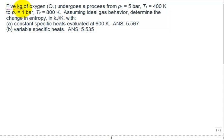For this problem we have 5 kilograms of oxygen undergoing a process from initial pressure of 5 bar and temperature at state 1 of 400 kelvin to a final pressure of 1 bar and final temperature of 800 kelvin. Assuming ideal gas behavior for this oxygen, determine the change in entropy in kilojoules per kelvin with constant specific heats evaluated at 600 kelvin and then variable specific heats. There are two approaches to calculate the same thing, which is the change in entropy. Note the units - it's kilojoules per kelvin, not kilojoules per kilogram kelvin, so it's the entropy not the specific entropy that we're asked to calculate.